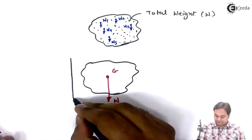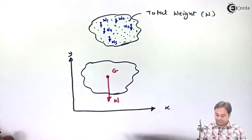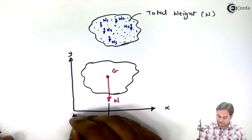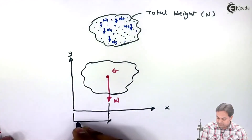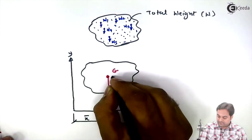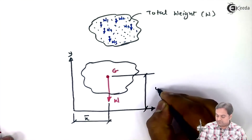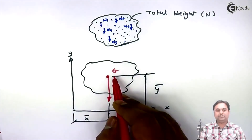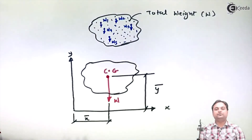The location of this single point G with respect to the coordinate axes is given by x̄ and ȳ. These coordinates x̄ and ȳ give the position of G, which is nothing but the center of gravity.